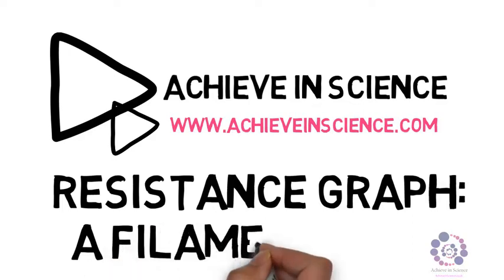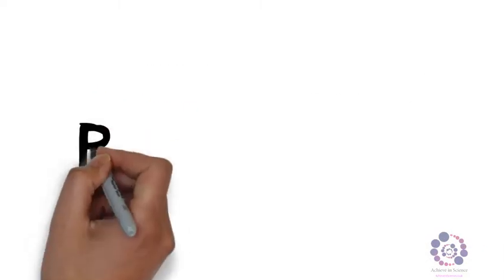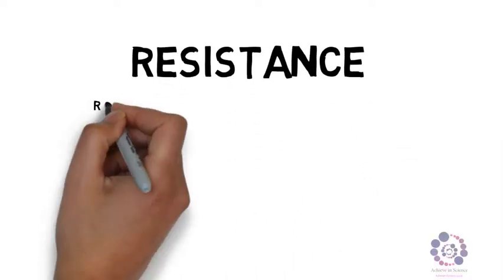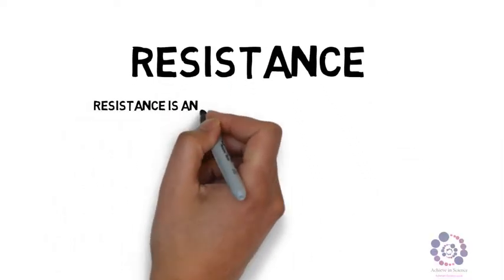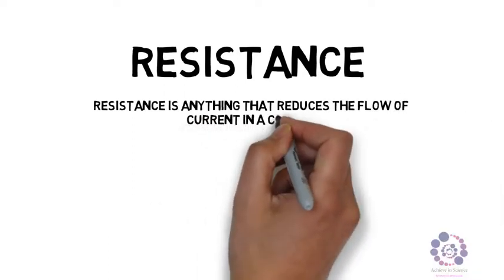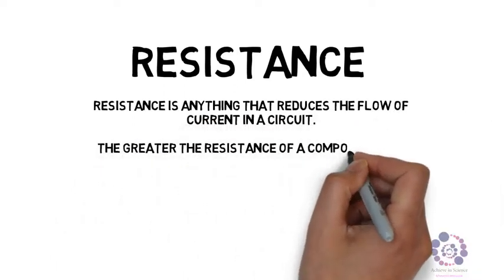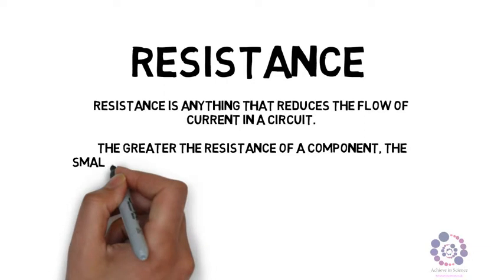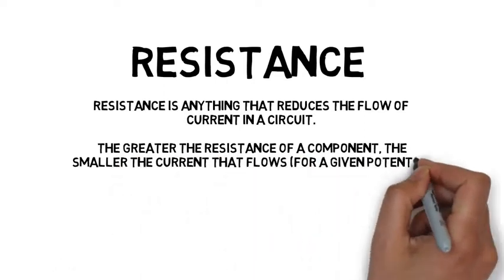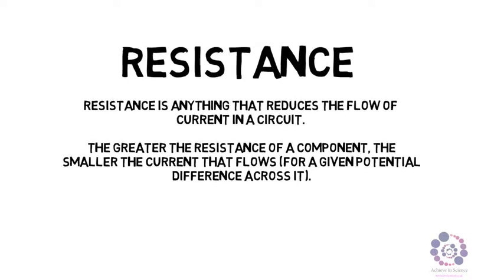It is first of all useful before we begin to remind ourselves of a few key points. First of all, resistance. Resistance is anything that reduces the flow of current within a circuit. Therefore this means that the greater the resistance of the component, the smaller the current that is able to flow through it for a given potential difference across it.